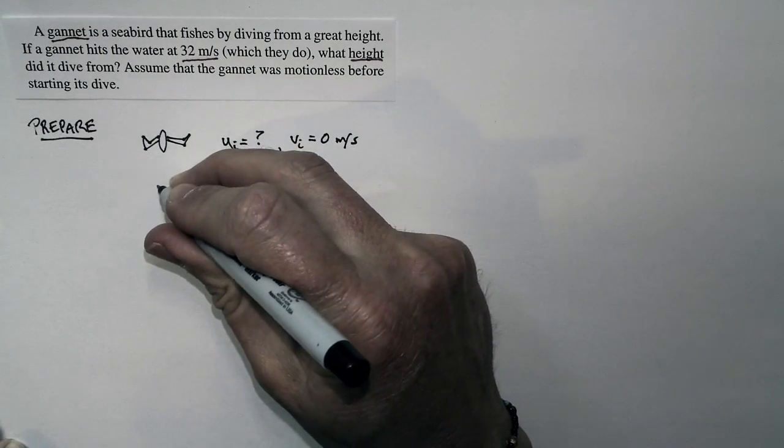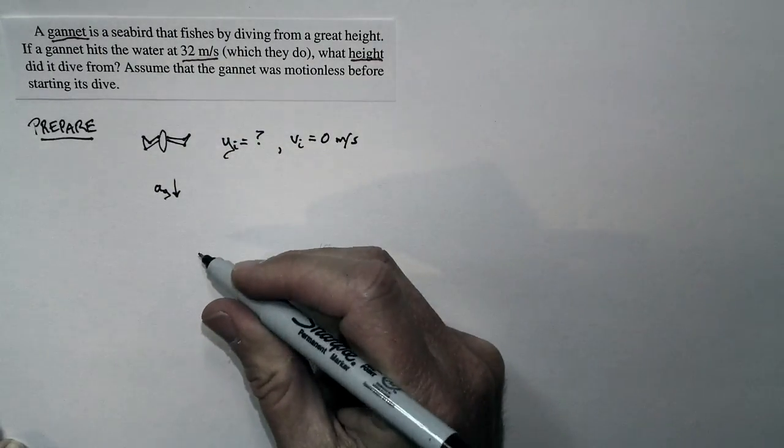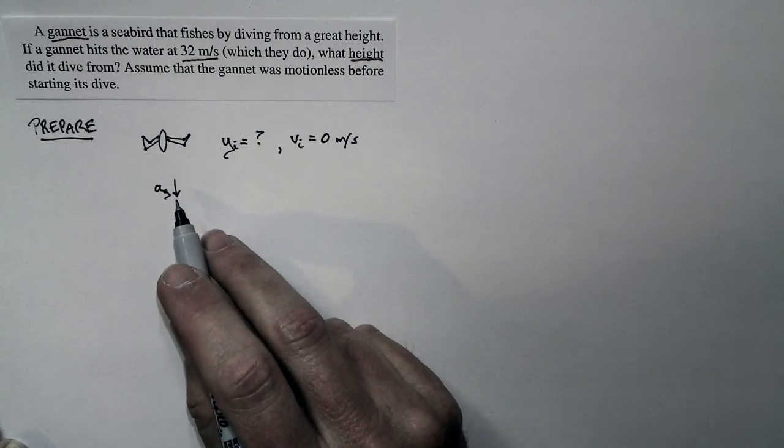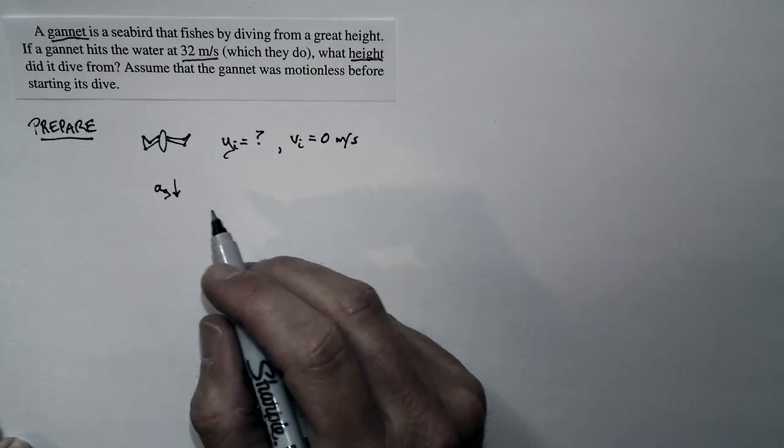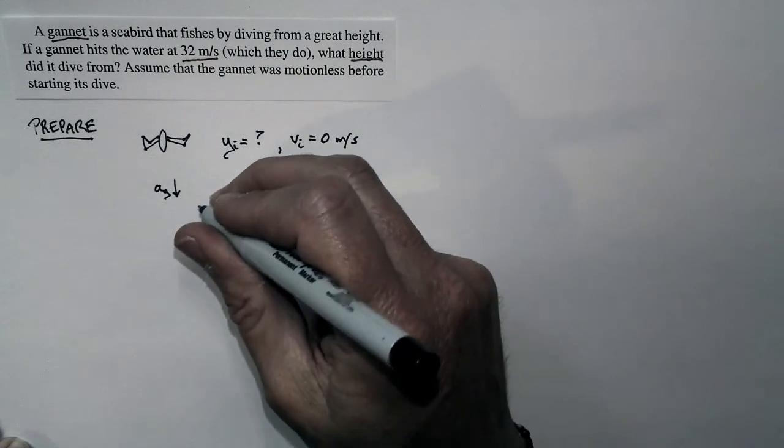Then the gannet falls. The acceleration is directed downward. We know the magnitude of the acceleration is 1g. So in fact, the acceleration is negative 9.8 meters per second squared, directed downward.